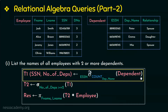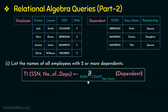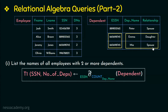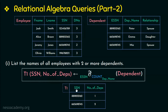As already mentioned, one employee can have more than one dependent. So to know which employee has two or more dependents, we first group by the employee SSN and then apply the count aggregate function on each group. We group them by employee SSN, giving us two groups, and then the count function is applied to each group. In the first group there is only one dependent, and in the second group there are two dependents. This result is stored in relation T1 with attributes SSN and number of dependents.